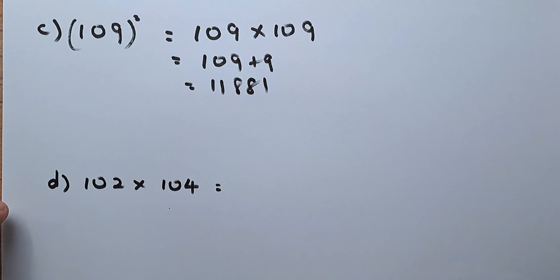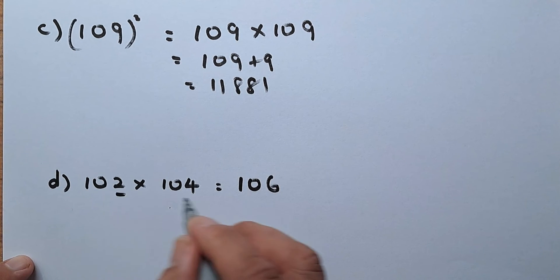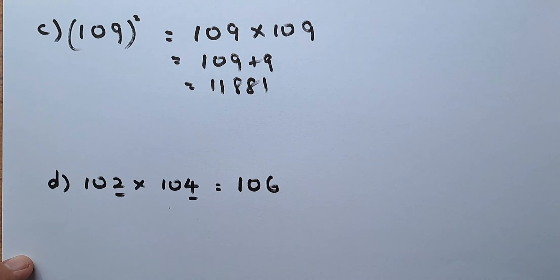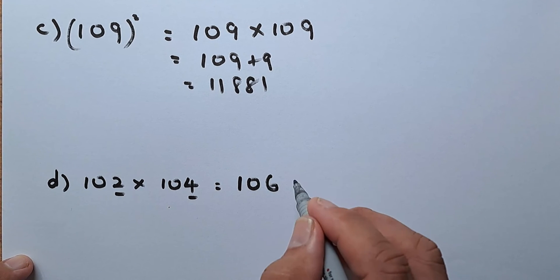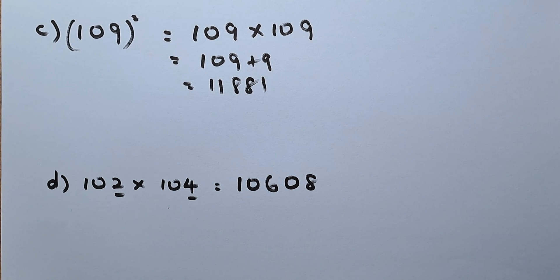And last but not least, 102 times 104. So 102 plus 4 is going to be 106. And then 2 times 4. Because you have to end in 5 digits, you cannot put an 8, you must put 08. So that is how easy it is to multiply a 3-digit number just above 100, less than 110. And you can do it in one second.